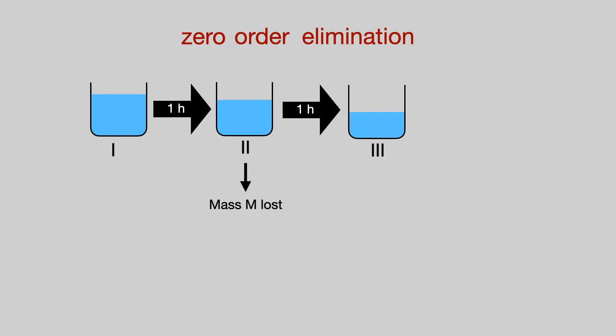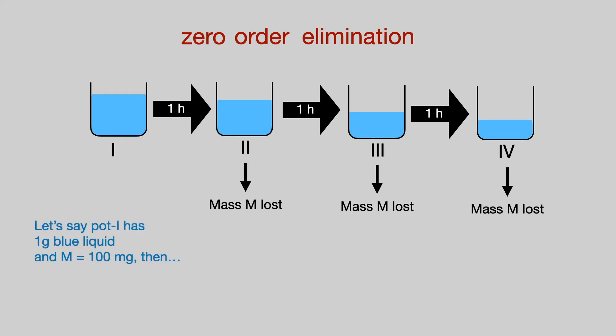Over the next hour, the pot loses the same mass m. And over the next hour, again, the pot loses the same mass m. Let's say pot 1 starts off with 1 gram of blue liquid and M is 100 milligrams.